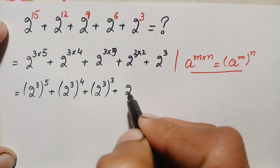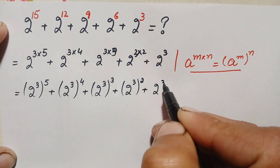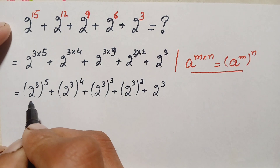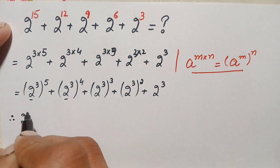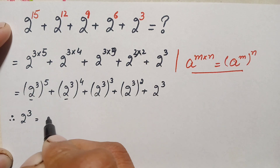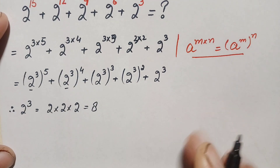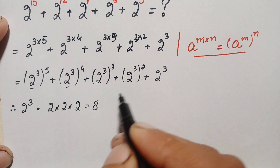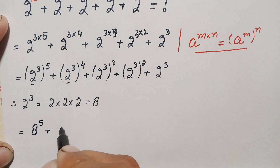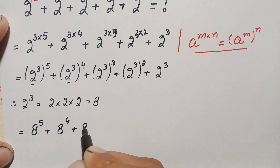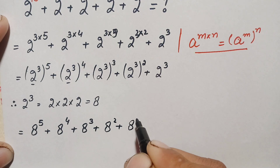We also have 2 raised to power 3, plus 2 raised to power 3. Now we find the value of 2 raised to power 3: 2 times 2 is 4 and 4 times 2 is 8, so 2 cubed equals 8. We replace all the bases with a, so the expression becomes a raised to power 5 plus a raised to power 4 plus a raised to power 3 plus a raised to power 2 plus a.